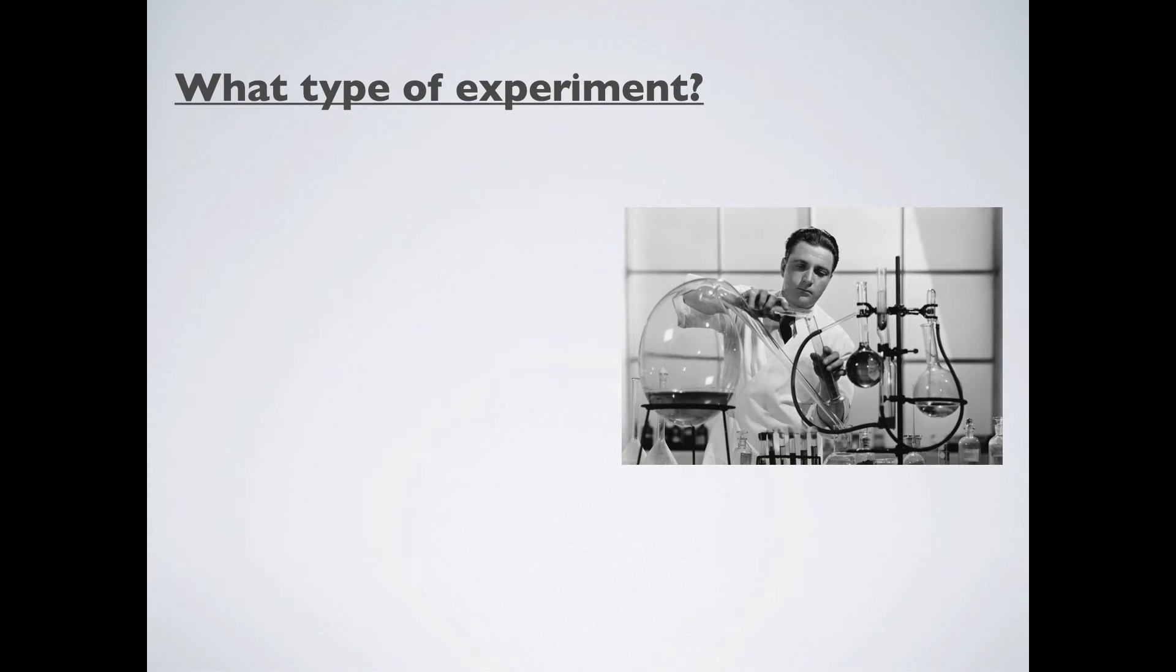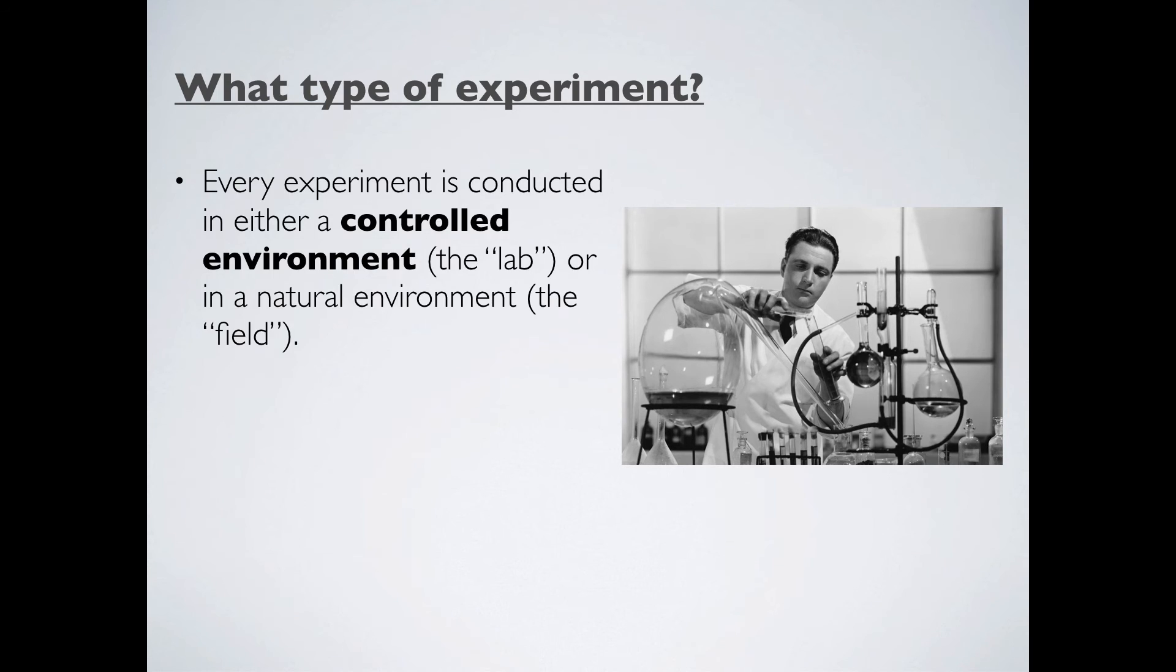First things first, we have to decide what type of experiment that we want to do. Now the thing about psychology is that every single experimental option has really just kind of two outcomes here. Either we conduct it in a controlled environment, which we will for convenience call the lab, or we conduct that in a natural environment. And again, for convenience, we will call that the field.